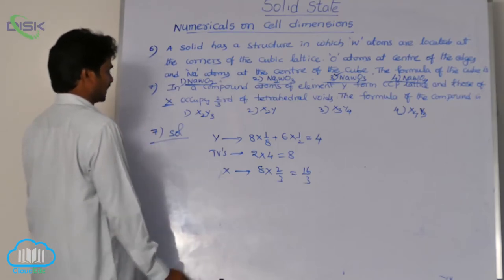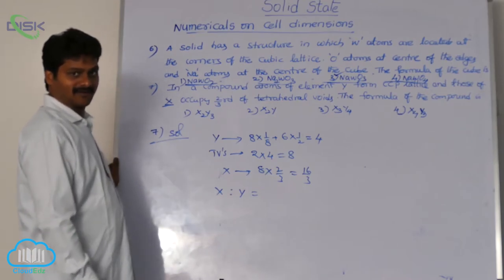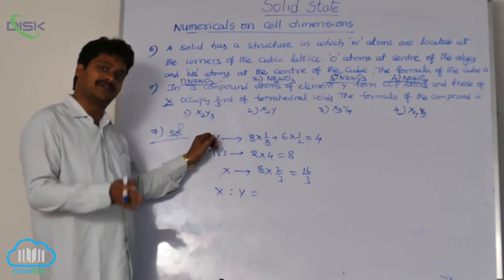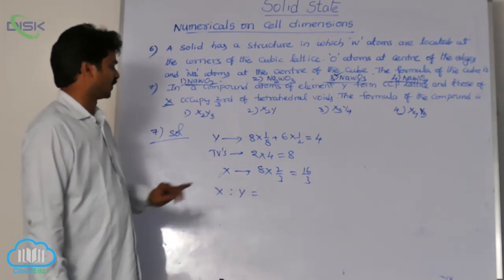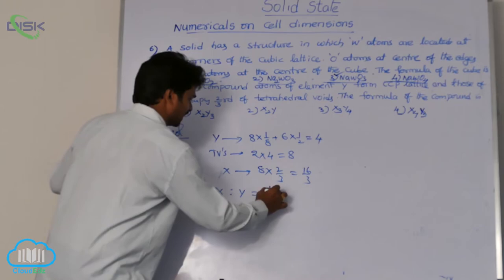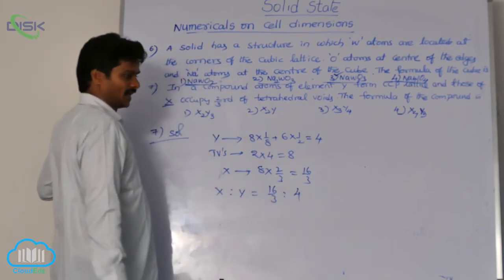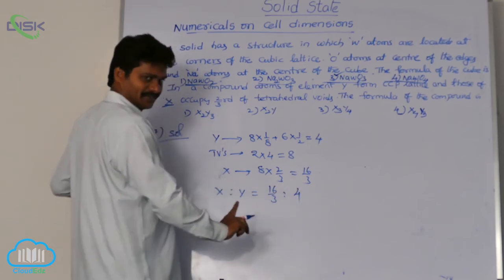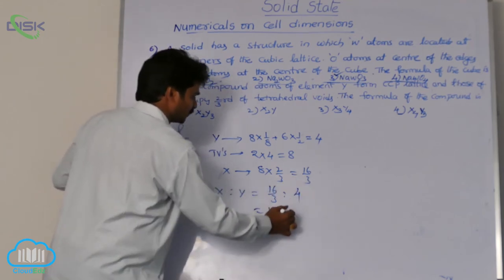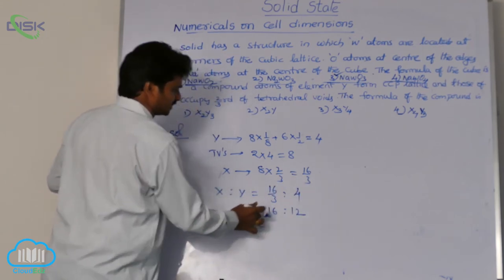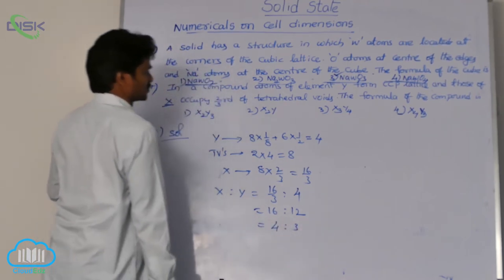Now let's take the ratio of X and Y. To write the formula, after getting the number of effective atoms of each element, write down the ratio. X:Y equals 16/3:4. Multiply both by 3, and you get 16:12, which simplifies to 4:3.